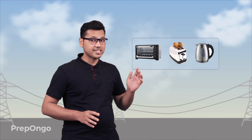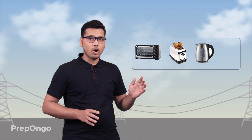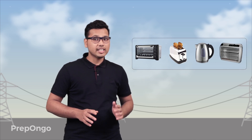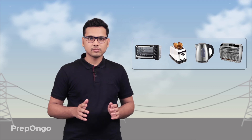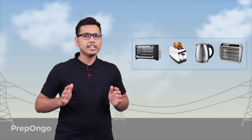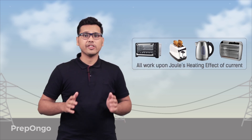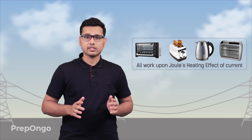But in many appliances like electric oven, electric toaster, electric kettle, or electric heater, this heating effect has an application. All these appliances work upon Joule's heating effect of current.